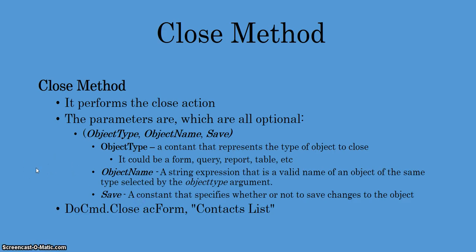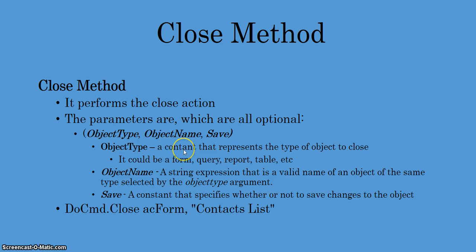Now the close method — what does that do? It performs a close action. The close method has parameters, and all these parameters are optional. They go in this order: parameter one is the object type, then the object name, and then the save option. The object type is a constant value that represents the type of object to close — it could be a form object, a query object, a report, or even a table object, plus many other objects in a database.